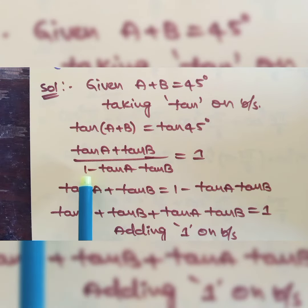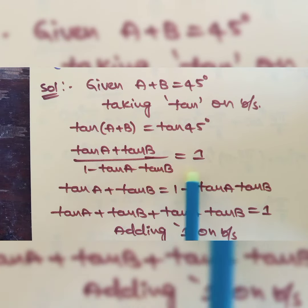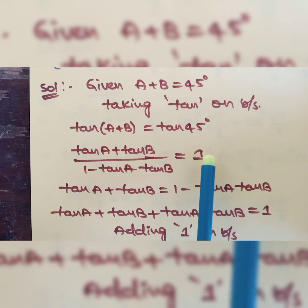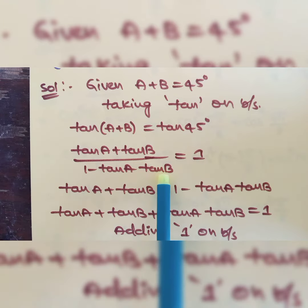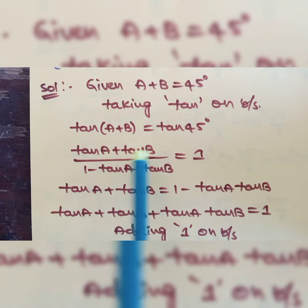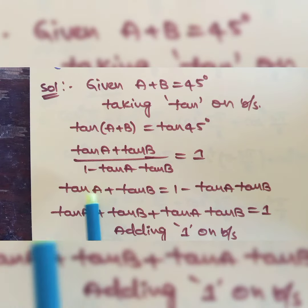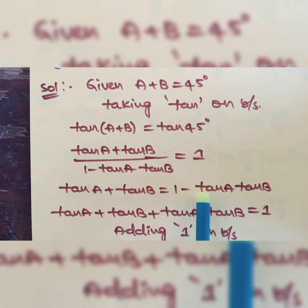This 1 minus tan A tan B is in the denominator. After cross-multiplying it will multiply. So 1 into (1 minus tan A tan B) will get 1 minus tan A tan B. This numerator we are writing as it is: tan A plus tan B is equal to 1 minus tan A into tan B.